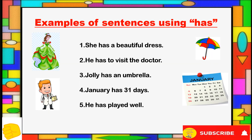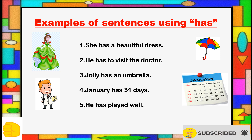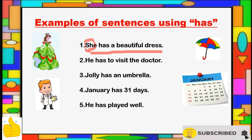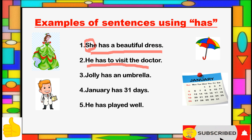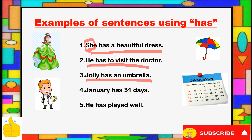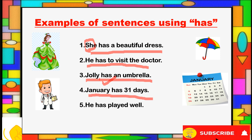Now let's move to some examples using 'has'. 'She has a beautiful dress' — we have used 'has' with 'she', a third person pronoun. Next: 'He has to visit the doctor' — we always use 'has' with 'he', not 'have'. Now see this example: 'Jolly has an umbrella' — there is no pronoun here, but Jolly is a singular noun, so we use 'has'. Similarly: 'January has 31 days' and 'He has played well'.